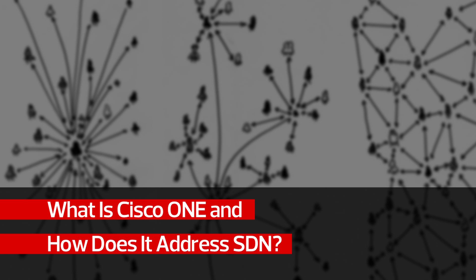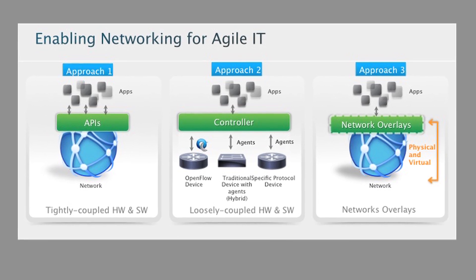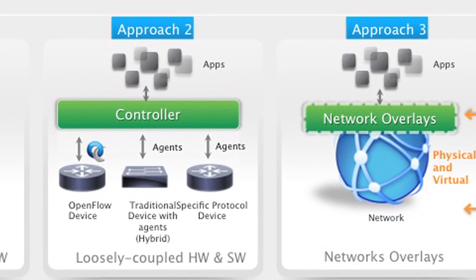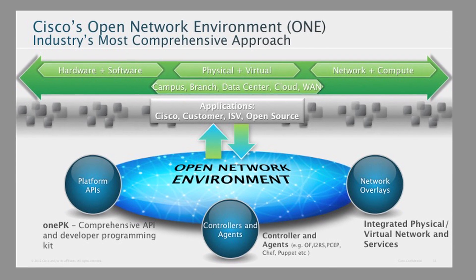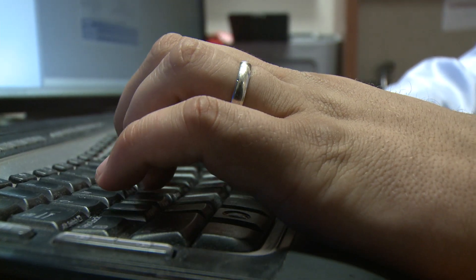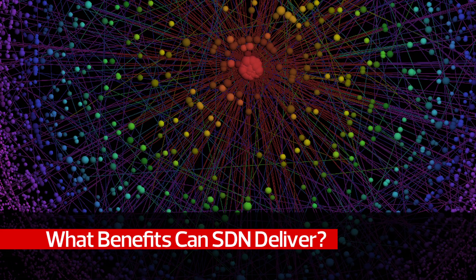Cisco's ONE, or their Open Network Environment, has feature functionalities that address the market space where you build an application to specifically talk to network devices — that's the first approach to SDN. The second is controller-based, and the third is a combination using an overlay: virtual devices over a physical network. The Nexus 1000V has its own contexts — virtual devices that can operate on a physical device.